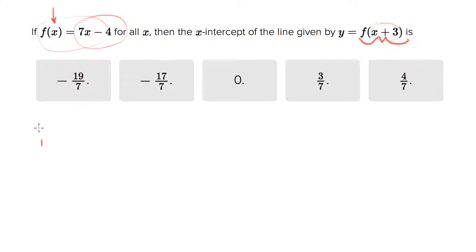So f of x plus 3, when they ask for that, what they're saying is everywhere that you see an x in this function, stuff an x plus 3 into it. So we'll have 7 times x plus 3 minus 4.